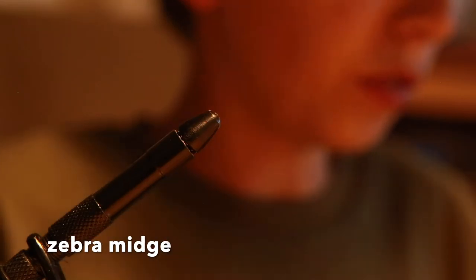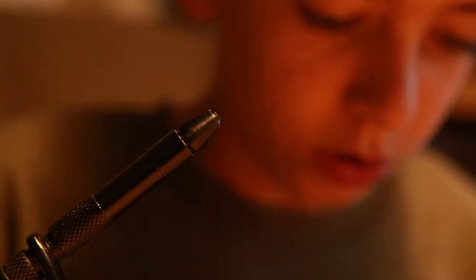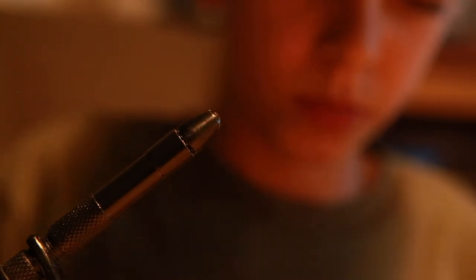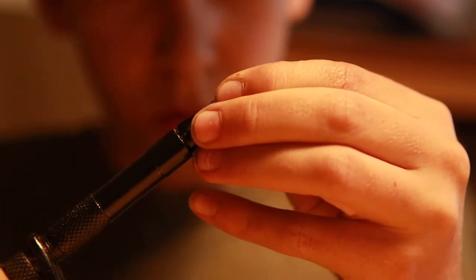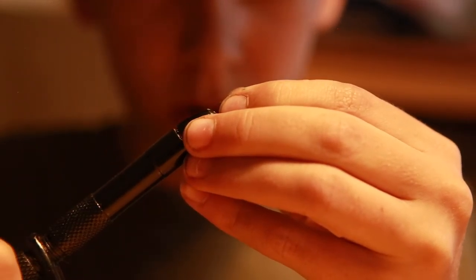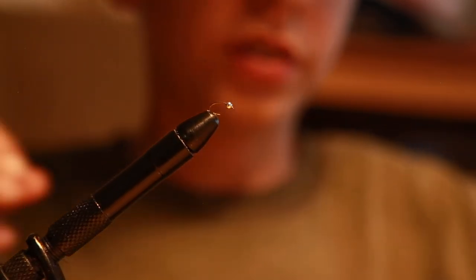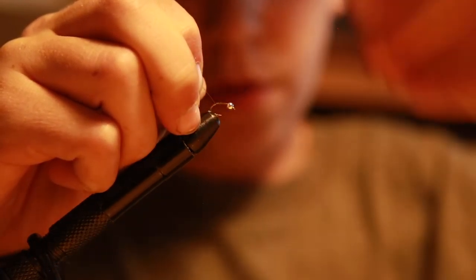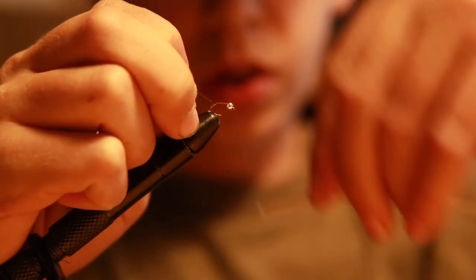Our next fly is a zebra midge or a black beauty. They're called either of them. Still using my brown thread on this one. I put a very small bead, size 16, same as with the brassie. I usually tie very small on zebra midges. Don't go above size 14—size 14 would be big. Once you got your bead on there, start your thread. This one's a little bit trickier than the brassie, still pretty easy. Clip the tag end close.